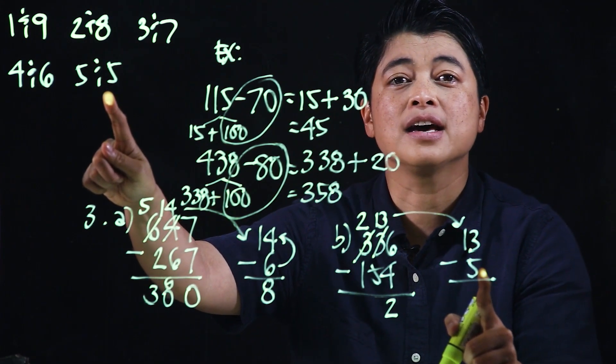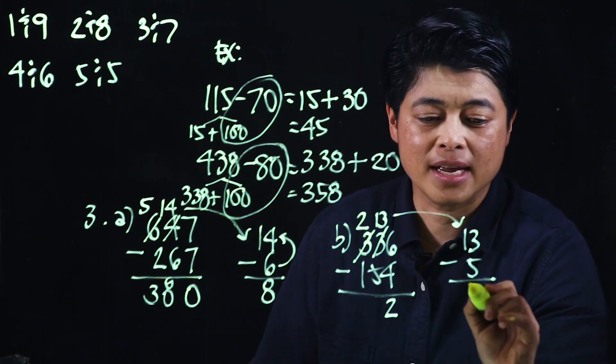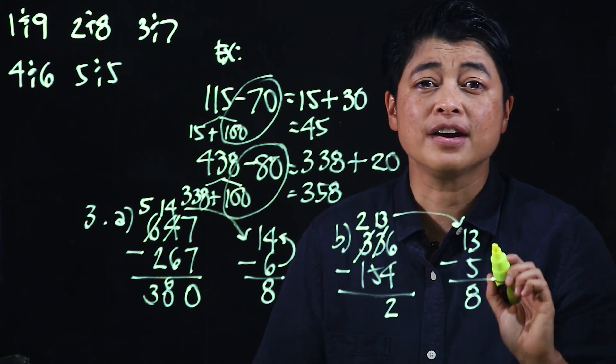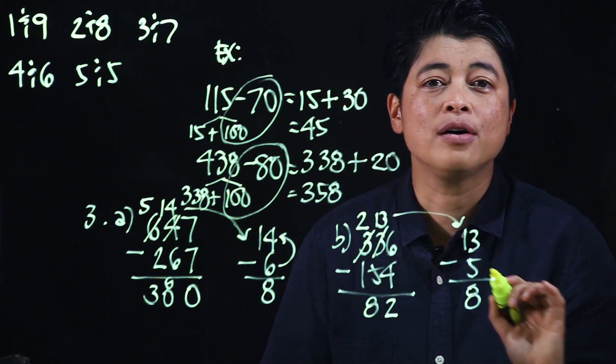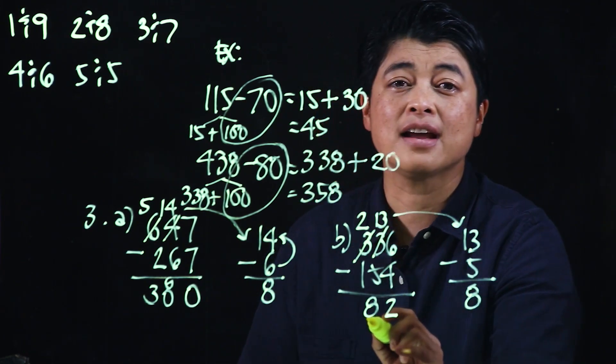So again, the importance is a 5 needs a 5, and then it needs another 3 to make it to 13. So that makes this 8. Again, if it's easier for your kids to write it here before writing it here, allow them. But if it's okay for them to write it directly here, then let them do that as well.